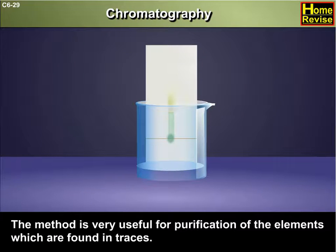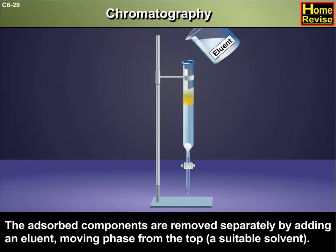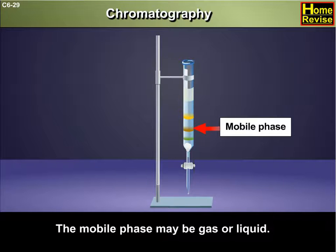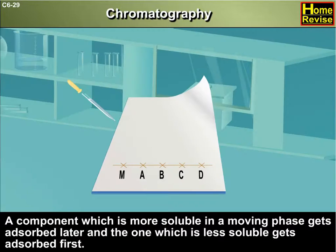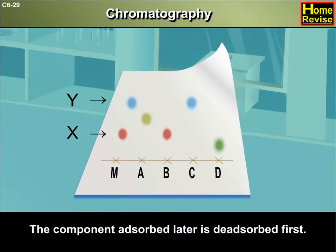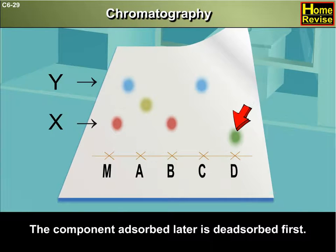The method is very useful for purification of elements found in traces. The adsorbed components are removed separately by adding an eluent moving phase from the top, i.e., a suitable solvent. The mobile phase may be gas or liquid. A component which is more soluble in the moving phase gets adsorbed later, and the one which is less soluble gets adsorbed first. The component adsorbed later is de-adsorbed first.